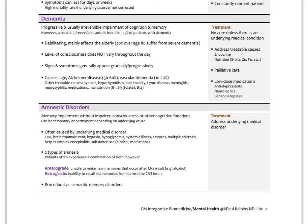Dementia involves cognitive decline, and amnesia is specifically memory impairment. One of the first things we always do when working up patients for mental health disorders is ask: is there an organic reason for this? Is there evidence of delirium, dementia, or amnesia? That's always important to keep in mind.